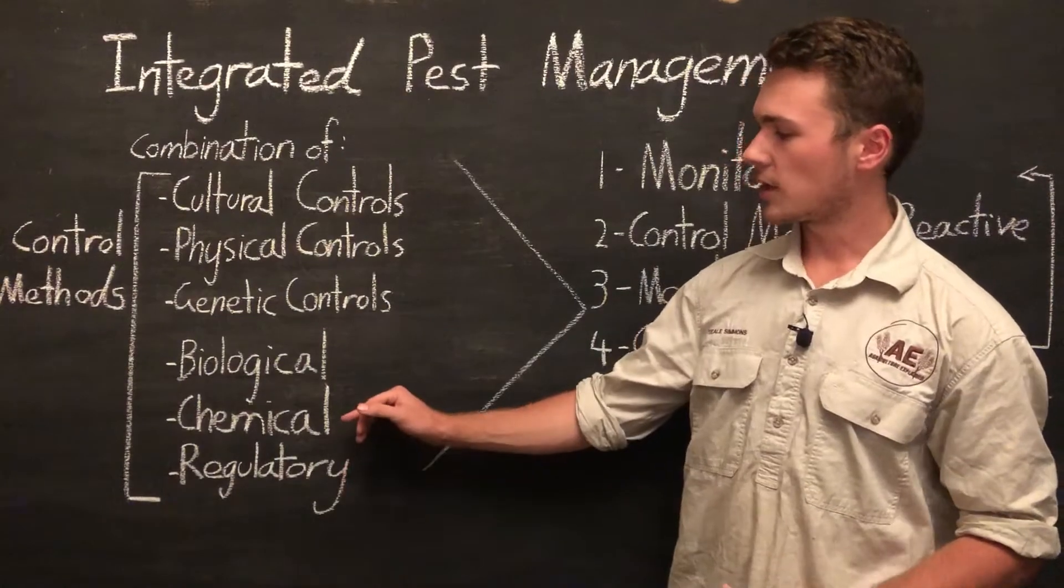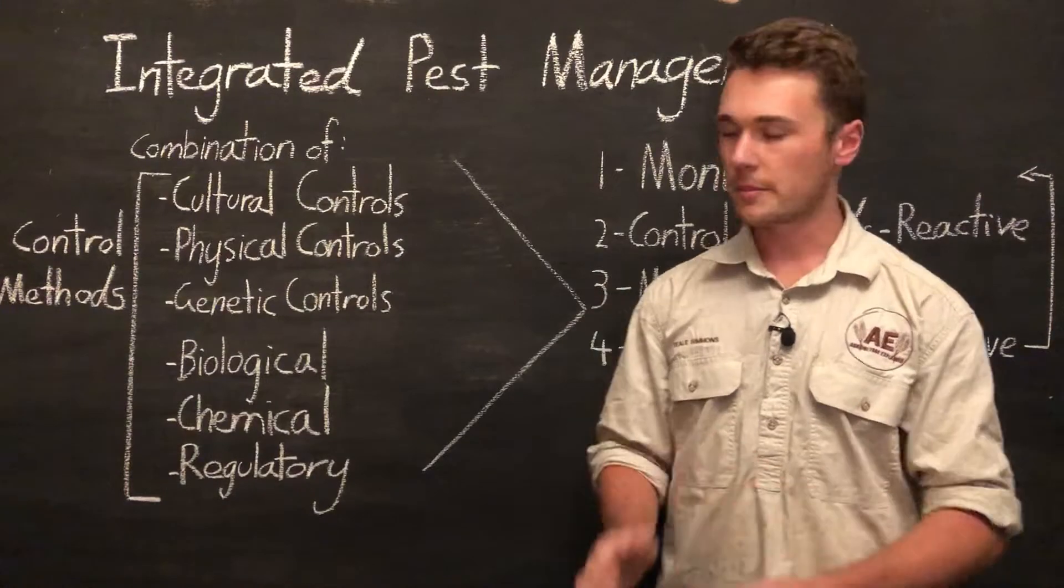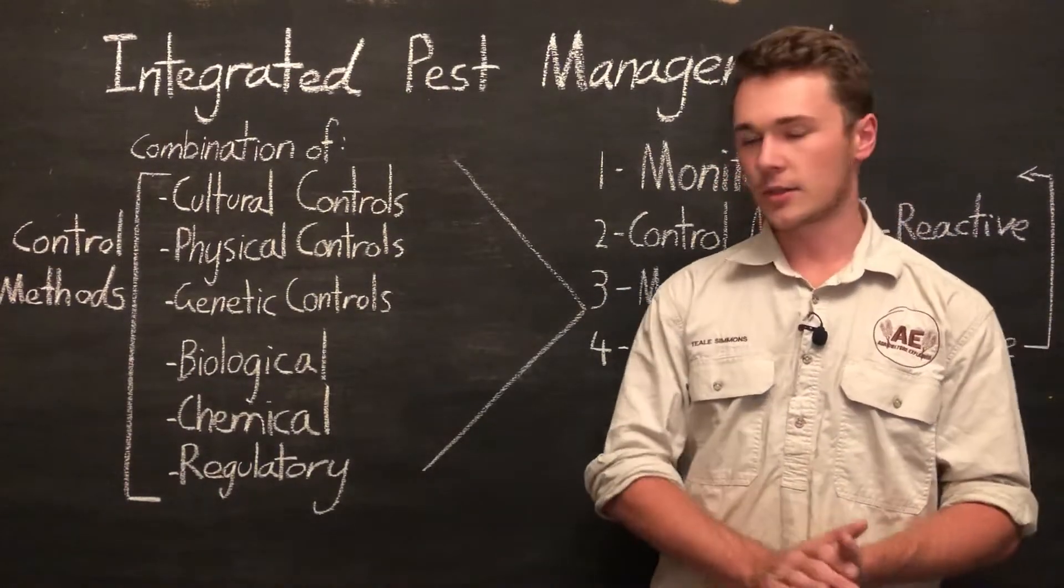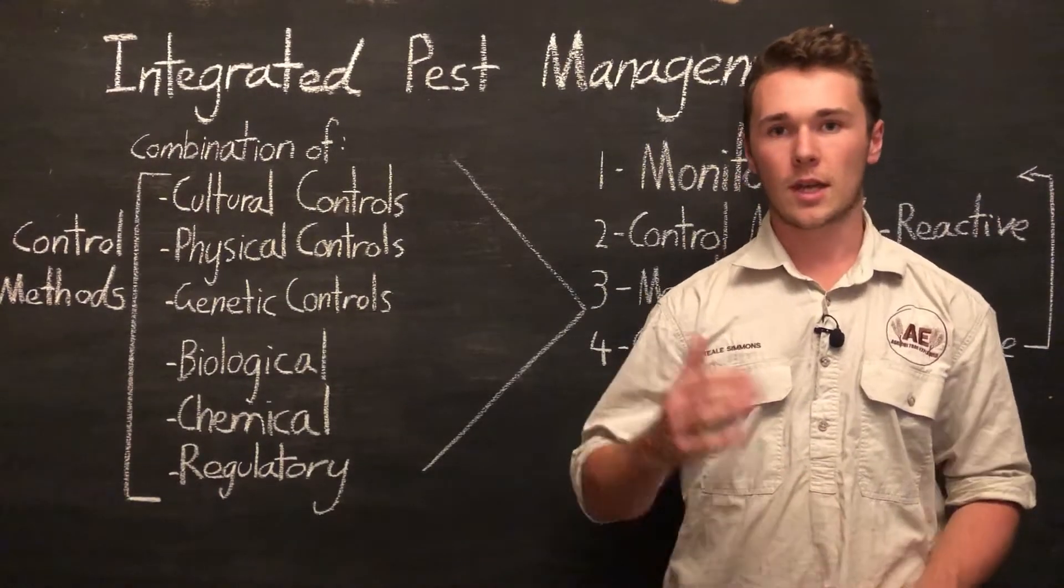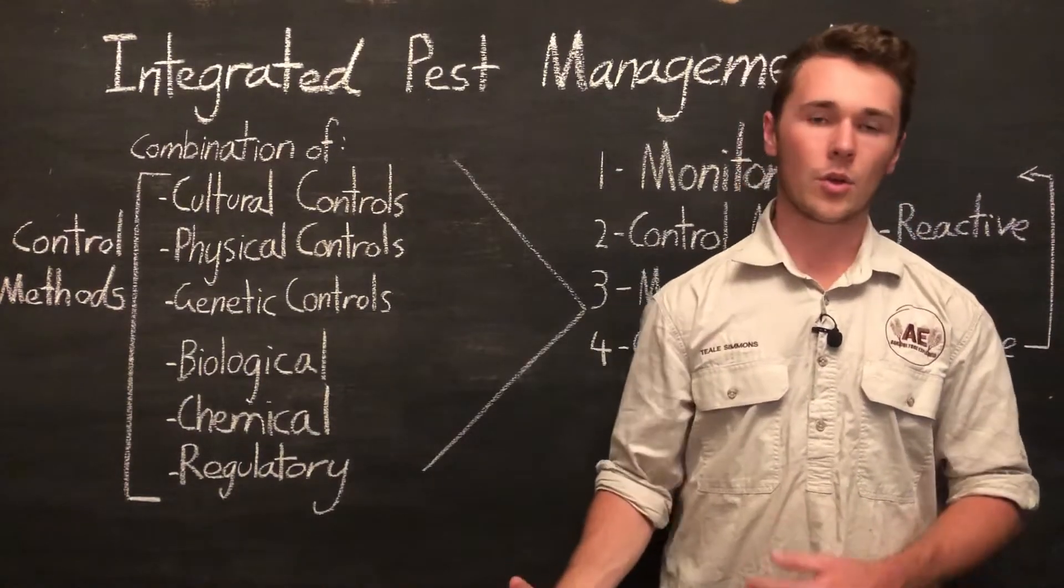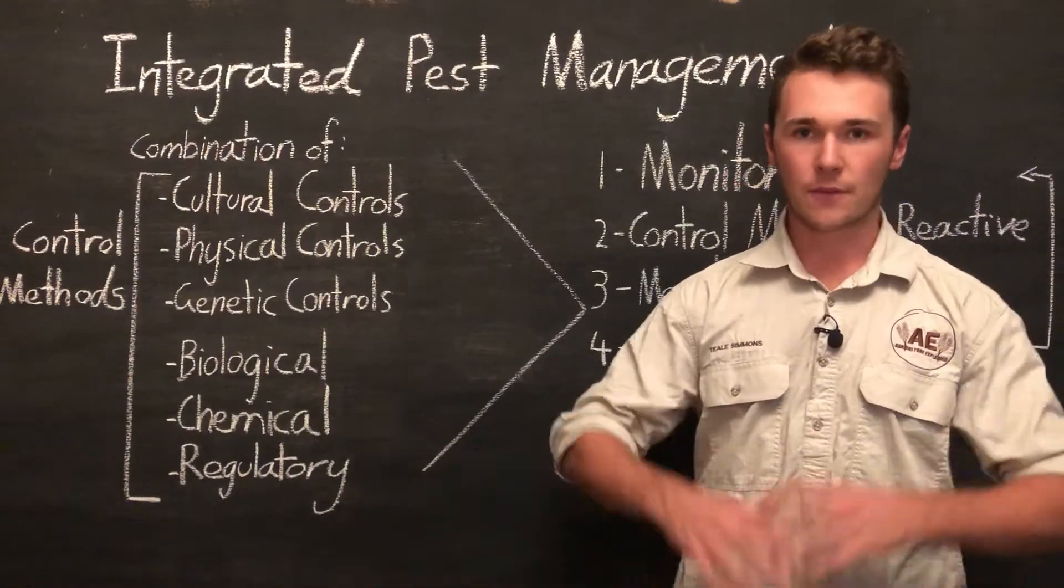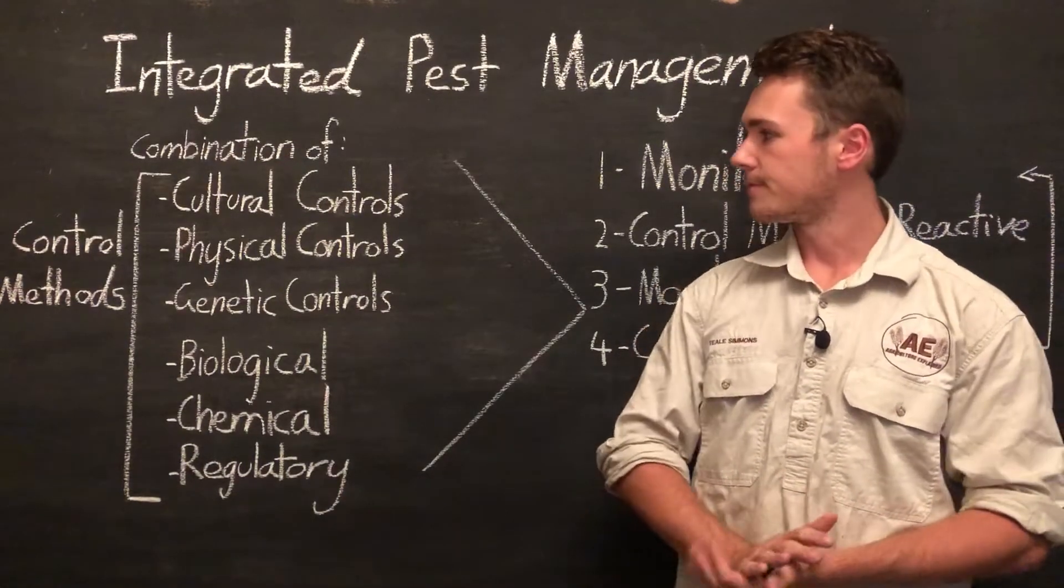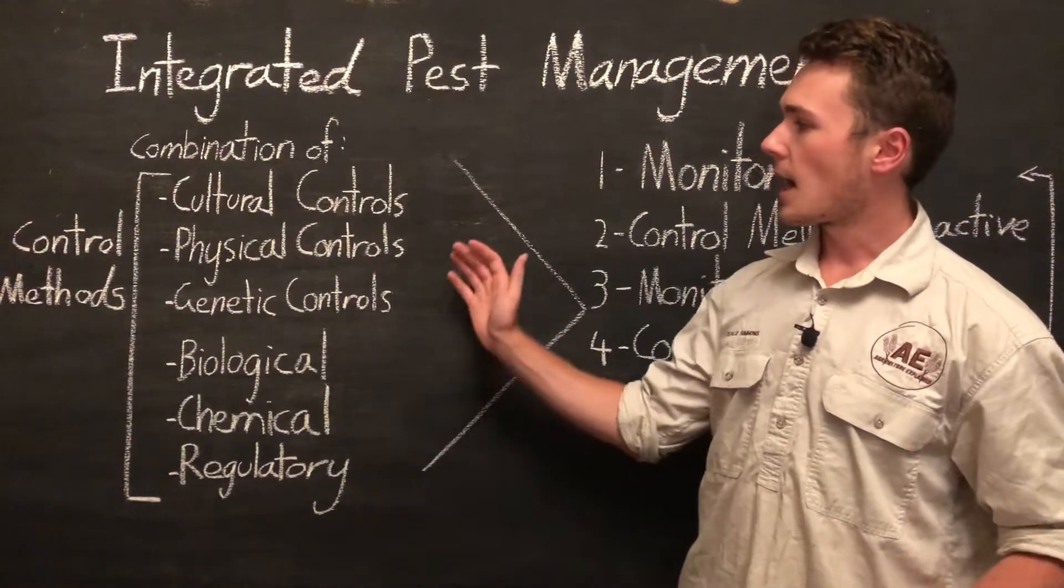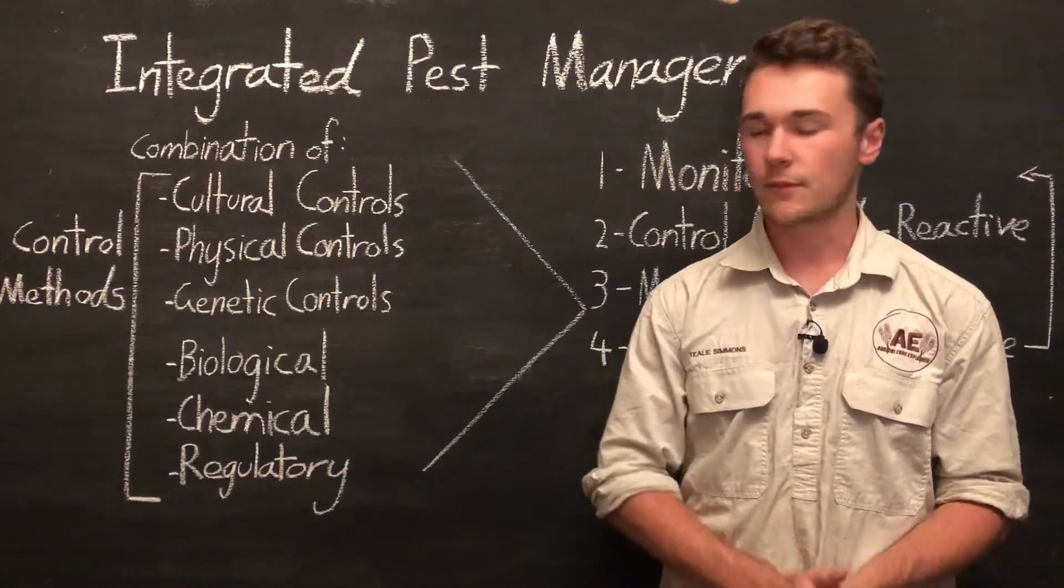Next we have chemicals which are generally pesticides, anything to really quickly kill the pest. Next we have regulatory. Now these are more rules to prevent spread through quarantining or isolation of either diseased material or sick animals. Any kind of rule that we can put in place to prevent further spread or further infection. Now again these are our tools that we can implement. These are more the groups that different controls fall into.